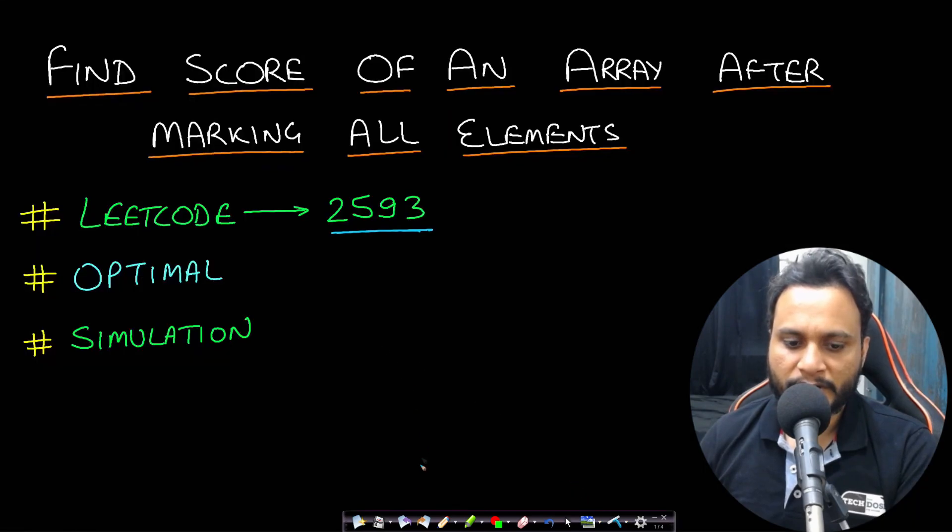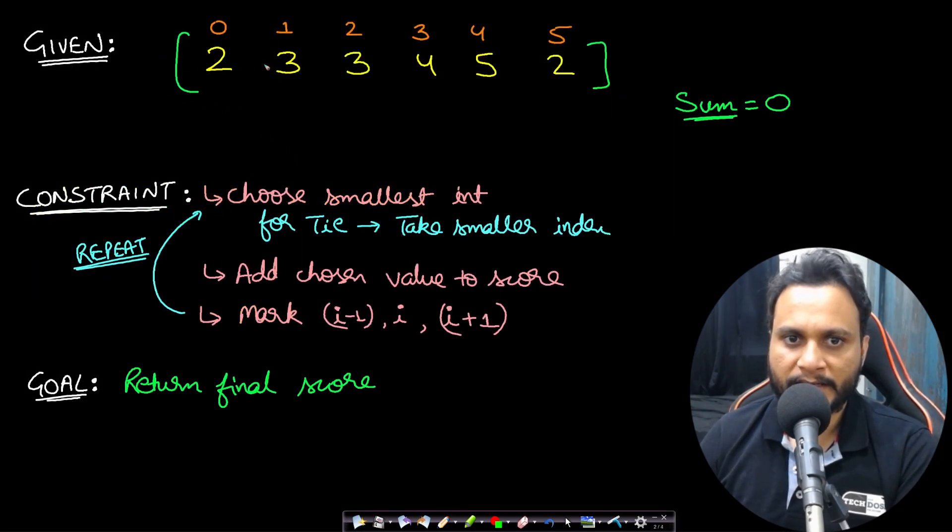So once we have understood this, let's now look at the problem. In this case you are given the array and let's say that we have 6 items. Our constraint is to choose the smallest integer. So let's choose the smallest integer. If there are two smallest integers like at index 0 and at 5 we have the smallest integers, then I will always go for the one with the smallest index that means this first 0. So first I will pick 2. Now add this chosen integer to the value of score. I will maintain a score variable. You can call it as the sum variable as well. And I will be simply adding the value to the sum variable. So this will become 2.